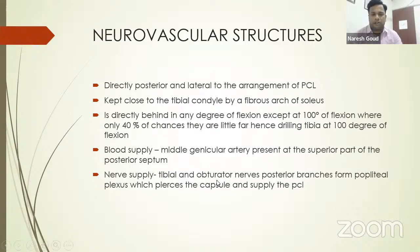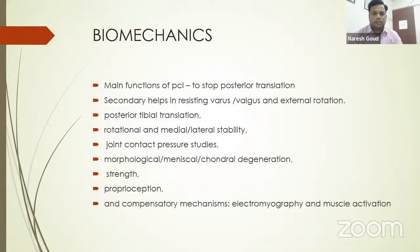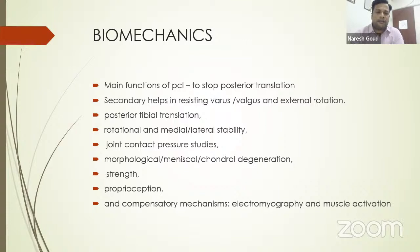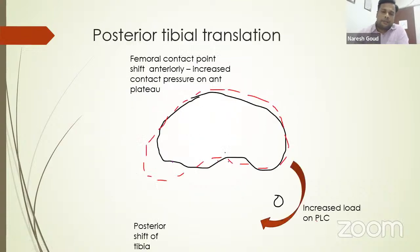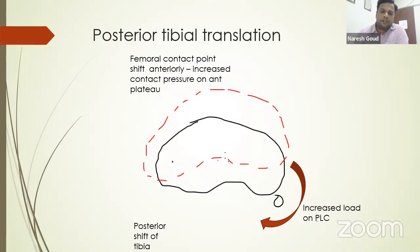The biomechanics: the PCL is the main restraint for posterior translation; secondarily it helps in resisting varus, valgus, and external rotation. In a PCL-deficient knee, several problems arise: rotational or medial-lateral stability, joint contact pressures, strength, and proprioception. There is a posterior shift of the tibia, which causes the femoral contact point to shift anteriorly. This increased contact pressure on the anterior tibial plateau causes more damage to the medial femoral condyle and medial meniscus becomes free posteriorly.